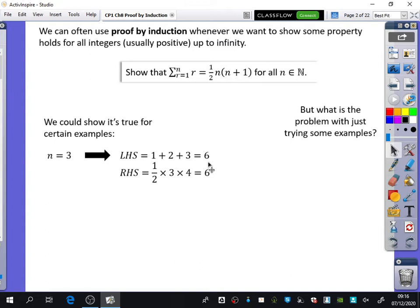But what's the problem of trying out numbers to prove that something is true? Andrew? If there's an infinite amount of numbers, you'd have to do an infinite amount of time which is impossible. Exactly. Like if you want to try and show that it's true for all the natural numbers, you would have to prove it true for all of the natural numbers, which is not going to be possible.